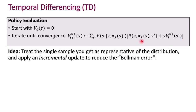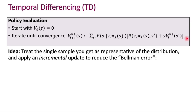We get one sample of s-prime drawn from this distribution, and we get the associated reward. We already have access to the current estimate of the value function. So what we're going to do is treat that single sample as a proxy for the entire expectation over the distribution. Because it's a noisy estimate, we don't go the whole distance and iterate until convergence, but instead just move the value function to be a little bit closer to the quantity on the right.